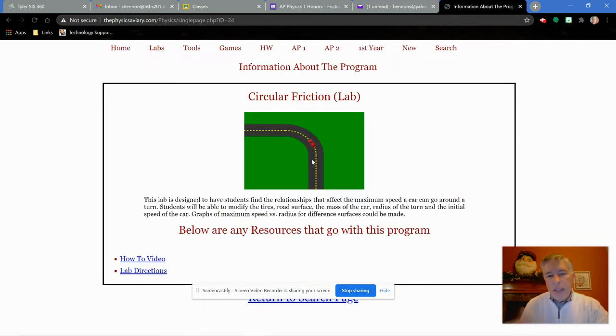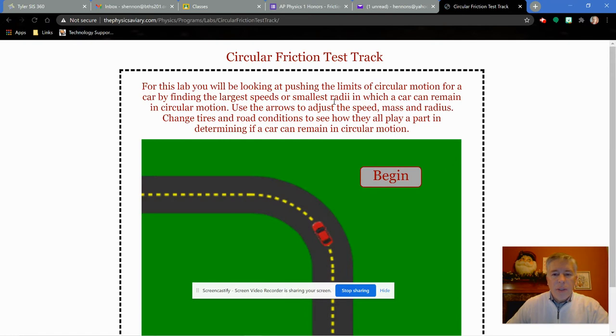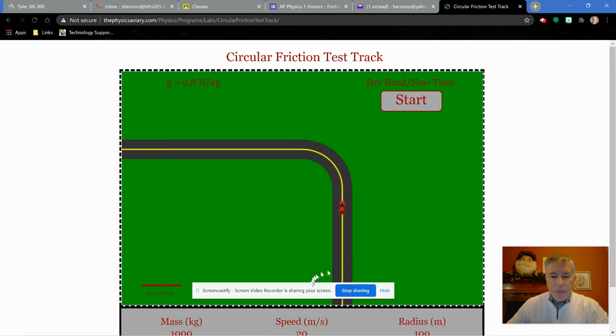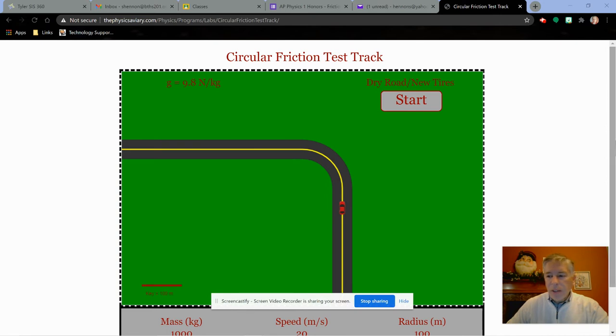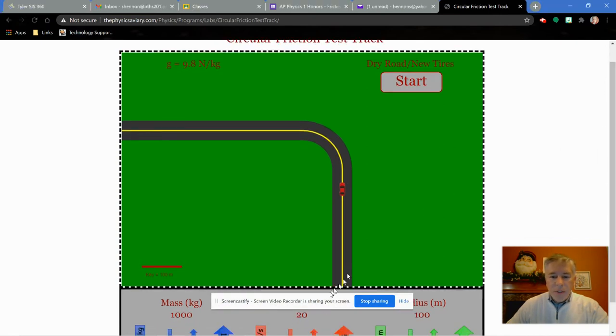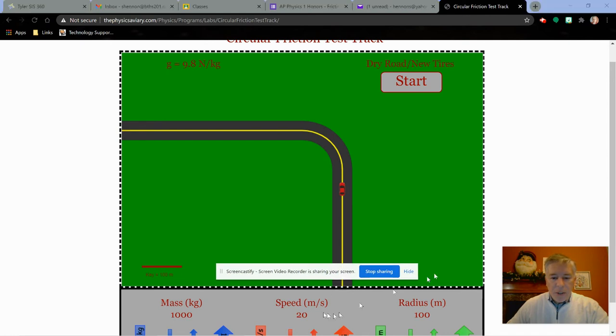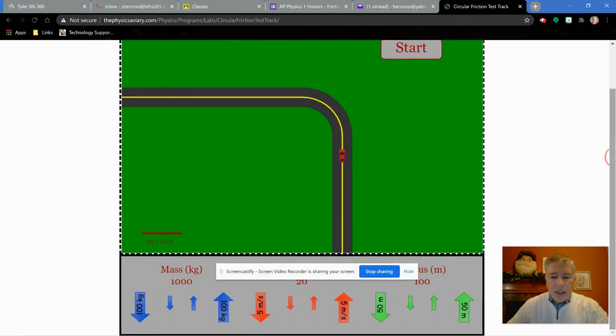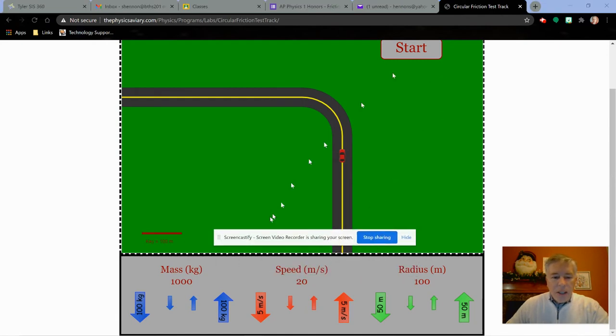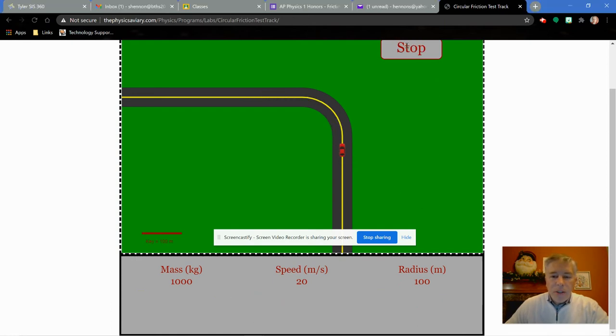Basically what it is, it's kind of designed as a lab to actually go through a curve. But we're just going to look at this object, a car, for example, kind of driving around a curve. You have the ability to change some things like the mass, the speed, the radius. I'm going to start out at 100 kilograms, going a speed of 20 meters per second, and a radius of 100 meters. If I hit start, the car follows that yellow line and makes it through.